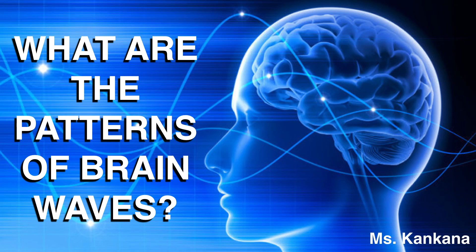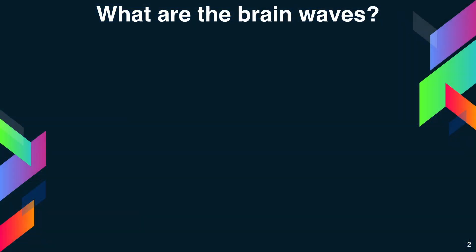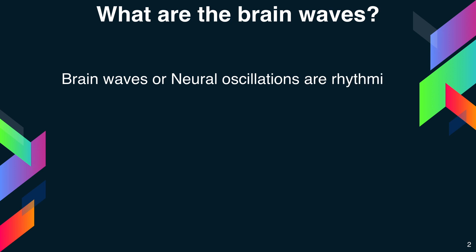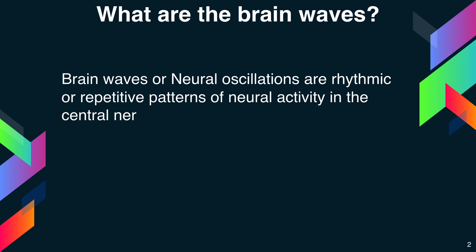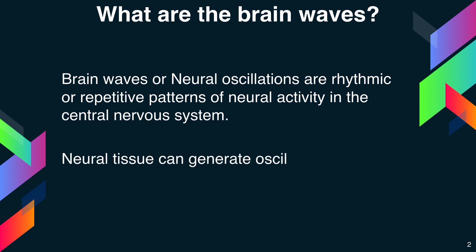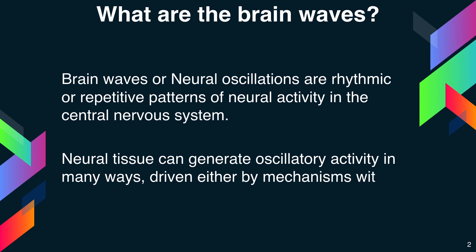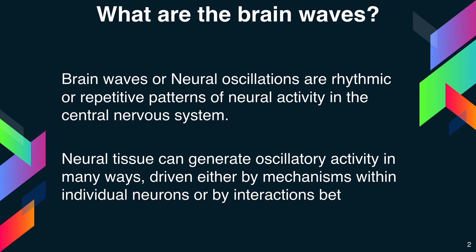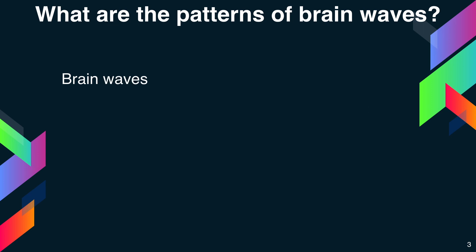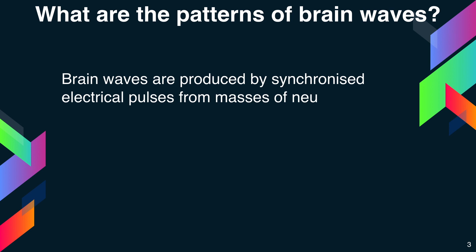Today I am going to answer the question: what are the patterns of brain waves? Brain waves, or neural oscillations, are rhythmic or repetitive patterns of neural activity in the central nervous system. Neural tissue can generate oscillatory activity in many ways, driven either by mechanisms within individual neurons or by interactions between neurons. Brain waves are produced by synchronized electrical impulses from masses of neurons communicating with each other.